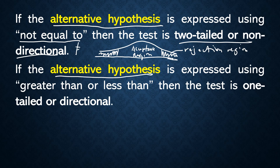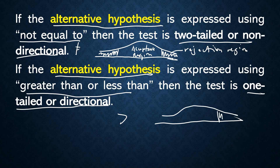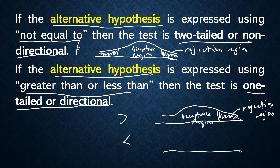However, if the alternative hypothesis is greater than or less than, then it is one-tailed or directional. If it is greater than, the rejection region is on the right side. If it is less than, the shaded rejection region is on the left side. Just always remember: greater than or less than means one-tailed or directional; not equal means two-tailed or non-directional.